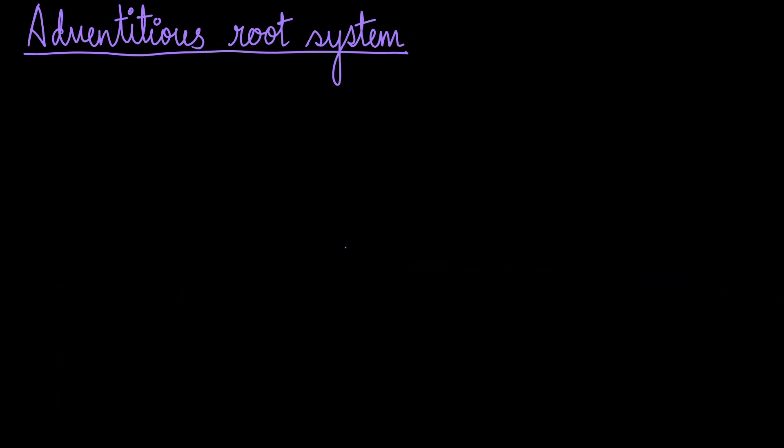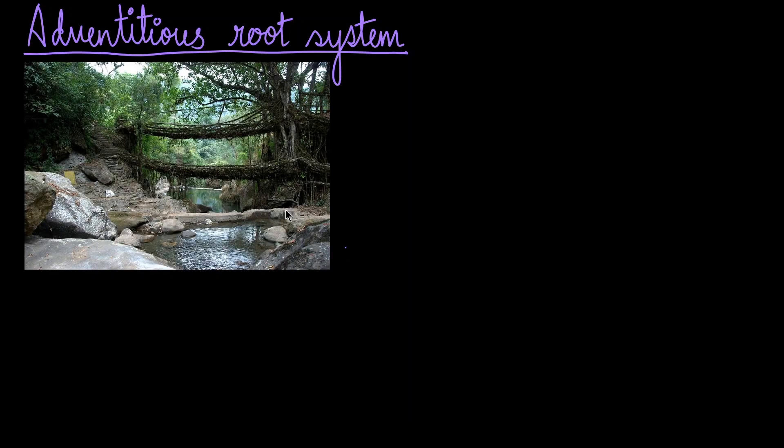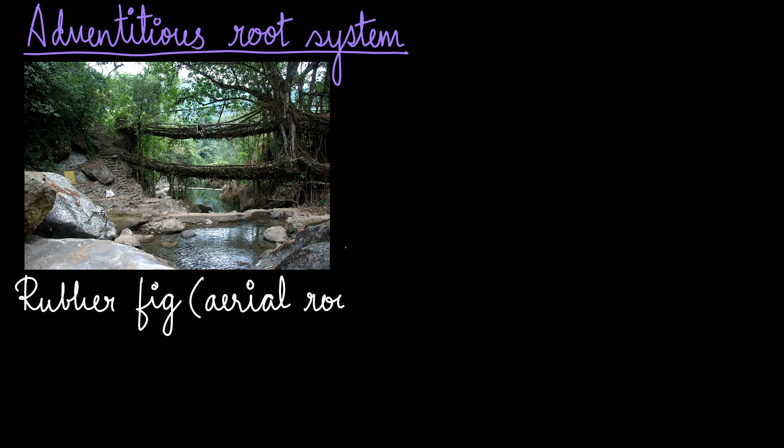Coming back to the images we saw at the start of the video, these living bridges of Meghalaya are the rubber fig trees. These bridges are actually made out of the very flexible aerial roots of this particular tree. The origin of this aerial root is the stem and branches of the tree. Locals arrange the aerial roots in such a way that it forms a branch, and the tree grows in that particular pattern, finally giving you bridge-like structures.